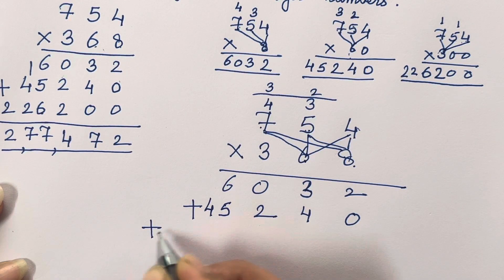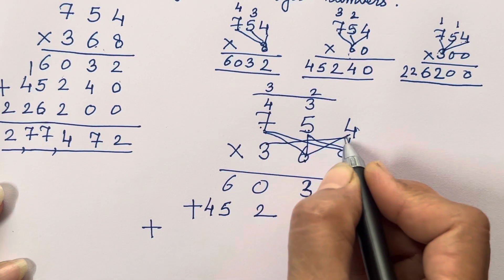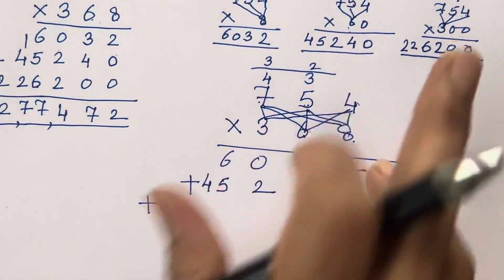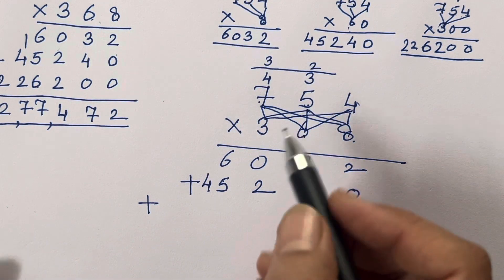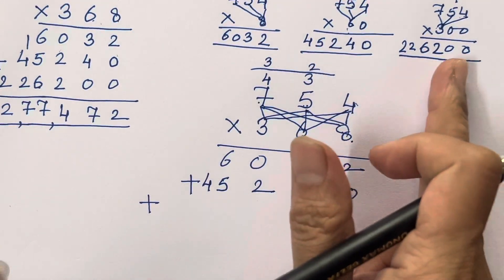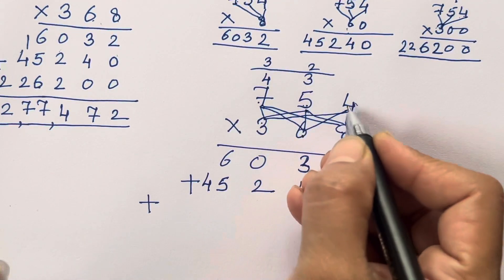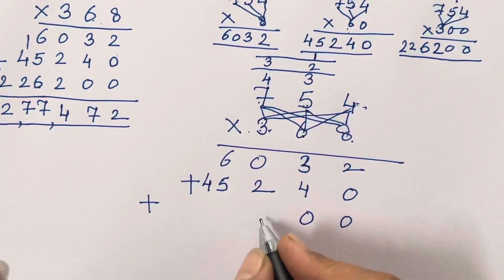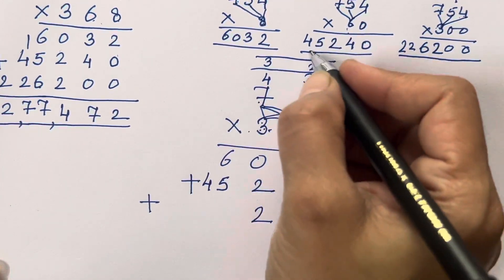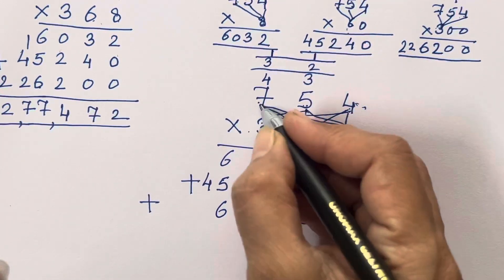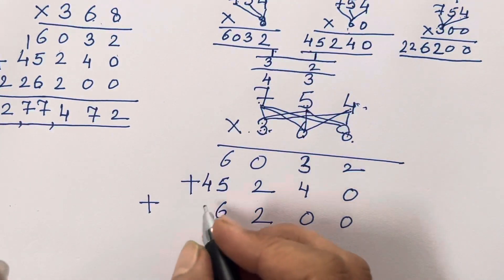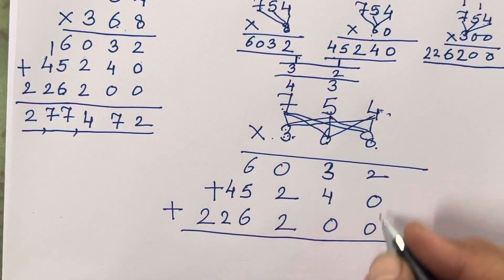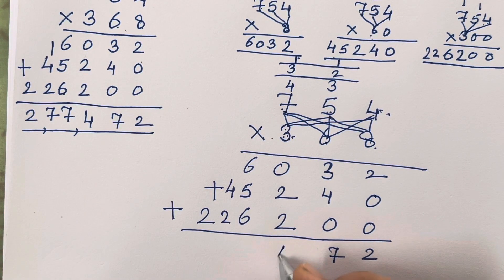Now take the next digit, 3, and multiply in the same pattern. Take two zeros as we did before. 3 × 4 = 12, write 1 carry and 2. 3 × 5 = 15, plus 1 = 16. 3 × 7 = 21, plus 1 = 22. You will see we have got the same partial products. After addition you will be able to see the same answer.